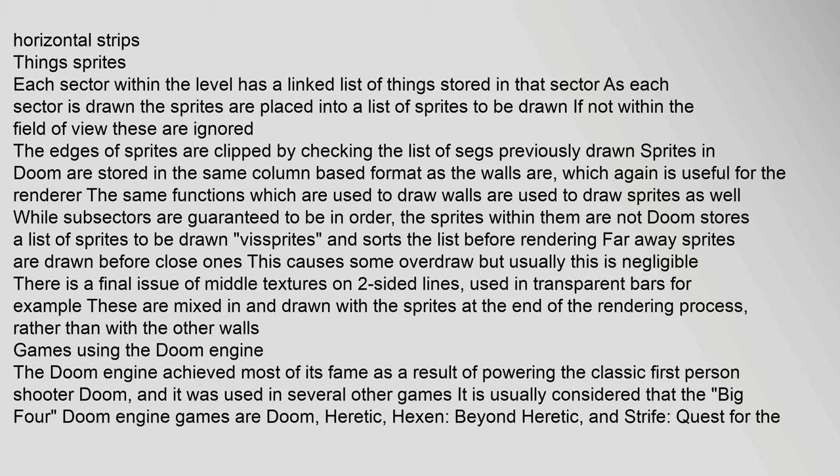Each sector within the level has a linked list of things stored in it. As each sector is drawn, sprites are placed into a list to be drawn; if not within the field of view, they are ignored. The edges of sprites are clipped by checking the list of segs previously drawn. Sprites in Doom are stored in the same column-based format as the walls, and the same functions used to draw walls are used to draw sprites. Doom stores a list of sprites to be drawn called visprites, sorts them, and draws far away sprites before close ones, causing some overdraw that is usually negligible.